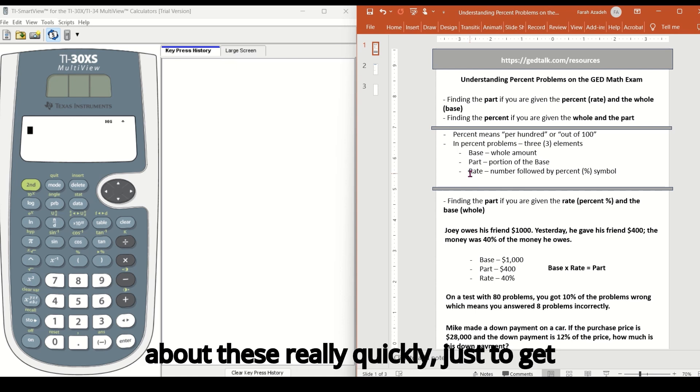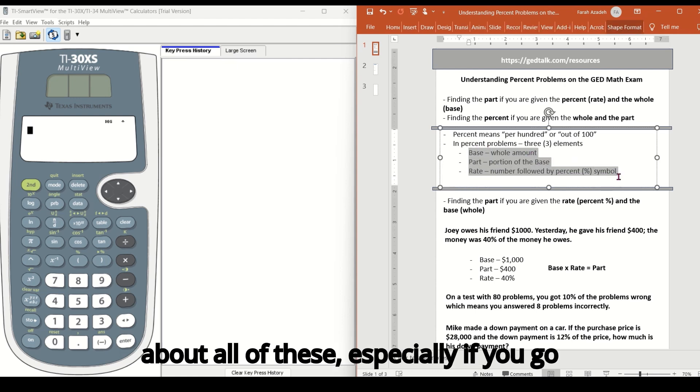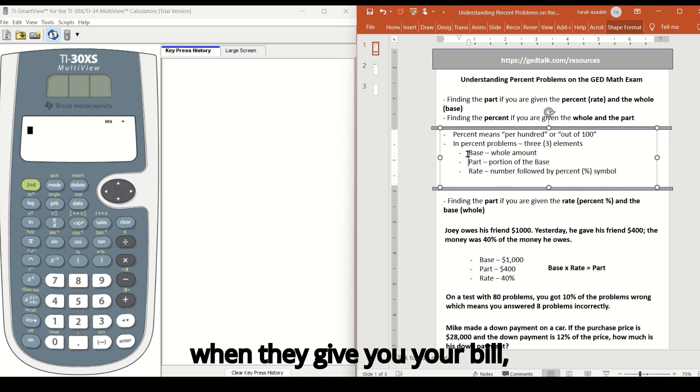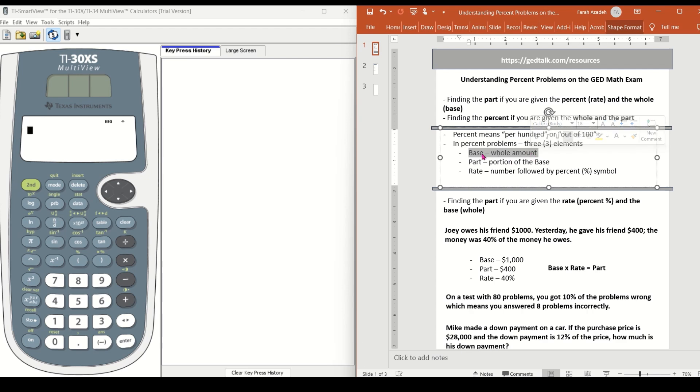So when we think about these really quickly, just to get your mind in the right place, you know about all of these, especially if you go out to a restaurant and you eat and you need to tip the server, the waiter, waitress. So when they give you your bill, that is the base. That's the whole number. Your bill could be $50.